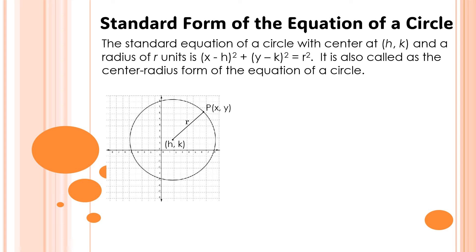This is the illustration of a circle wherein the center is located at (h, k), wherein h is the x-coordinate of the center of the circle and k is the y-coordinate of the center of the circle. So the equation will be the quantity of x minus h squared plus the quantity of y minus k squared is equal to r squared.